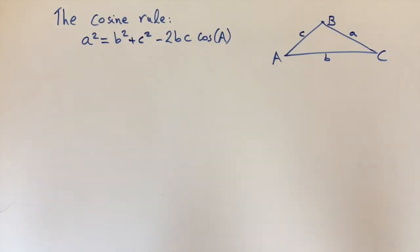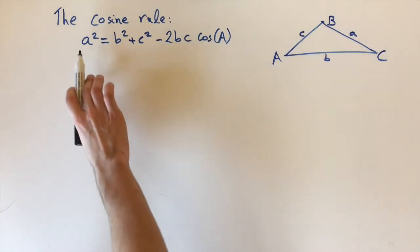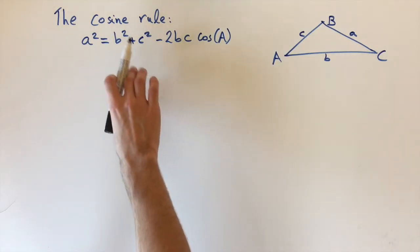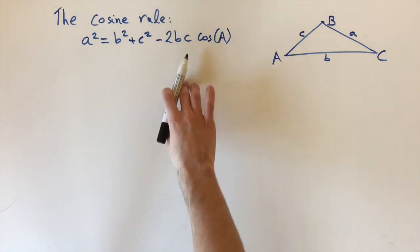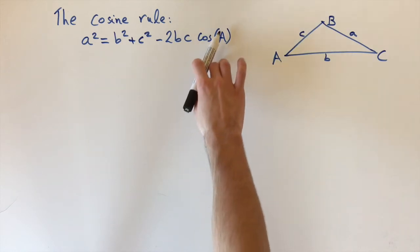Okay, so today we're looking at the cosine rule. This is another really nice rule for triangles that states that a squared equals b squared plus c squared minus 2bc times cosine of angle A.